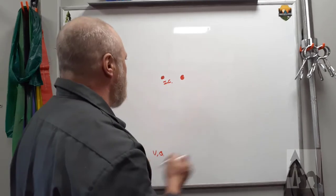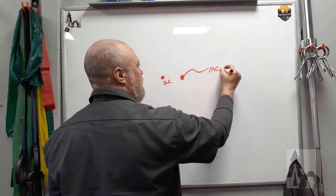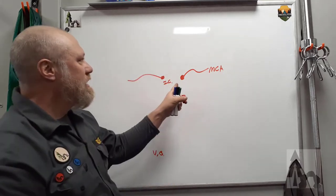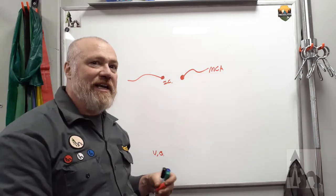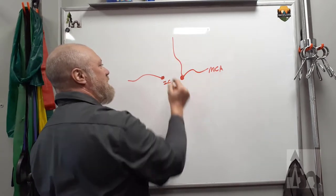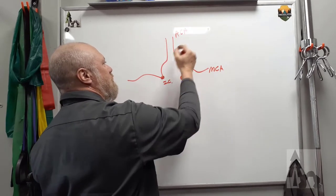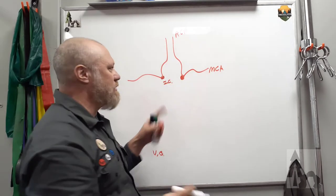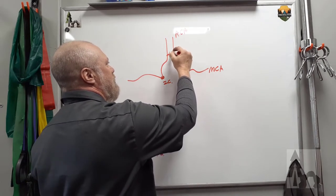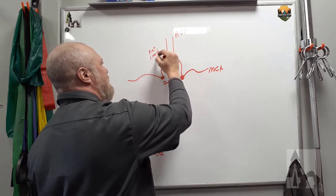You're going to have the middle cerebral artery — that's going to be the main branch off the internal carotid as it enters the skull. You're going to have another branch that's going to be the anterior cerebral artery, and I'll show you where these are on a brain in a moment. These two are going to be connected by an anterior communicating artery.